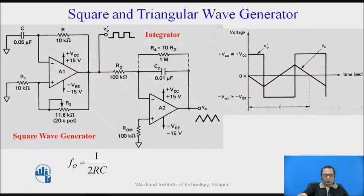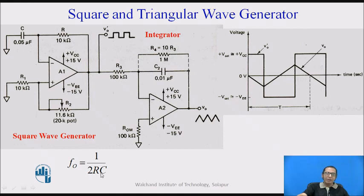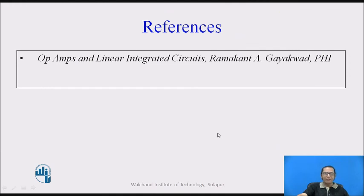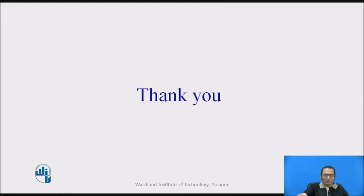Now, combining these two circuits: the op-amp as a square wave generator with frequency given by 1/(2RC), and its output fed into an integrator whose output is a triangular wave. The frequency of the square wave and the triangular wave are the same, given by 1/(2RC). This is a very simple circuit — using only two op-amps and a few resistors and capacitors, we can design a circuit that gives both a square wave and a triangular wave output. The reference used for this session is the popular book 'Operational Amplifier and Linear Integrated Circuits' by Ramakant Gayakwad. Thank you very much for joining this session.